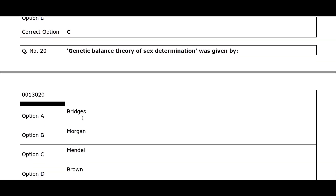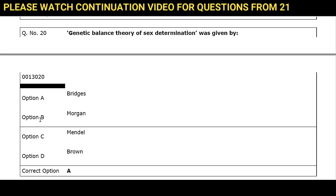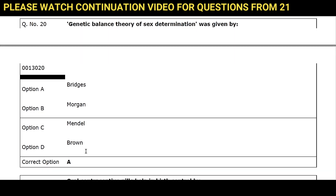Q20. Genetic balance theory of sex determination was given by: Option A. Bridges. Option B. Morgan. Option C. Mendel. Option D. Brown. Correct option A.